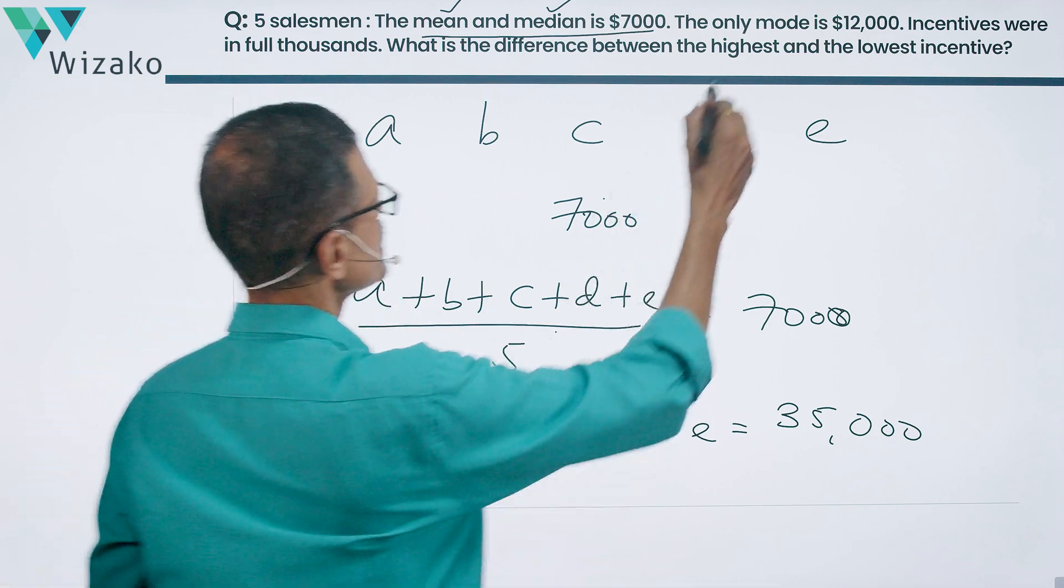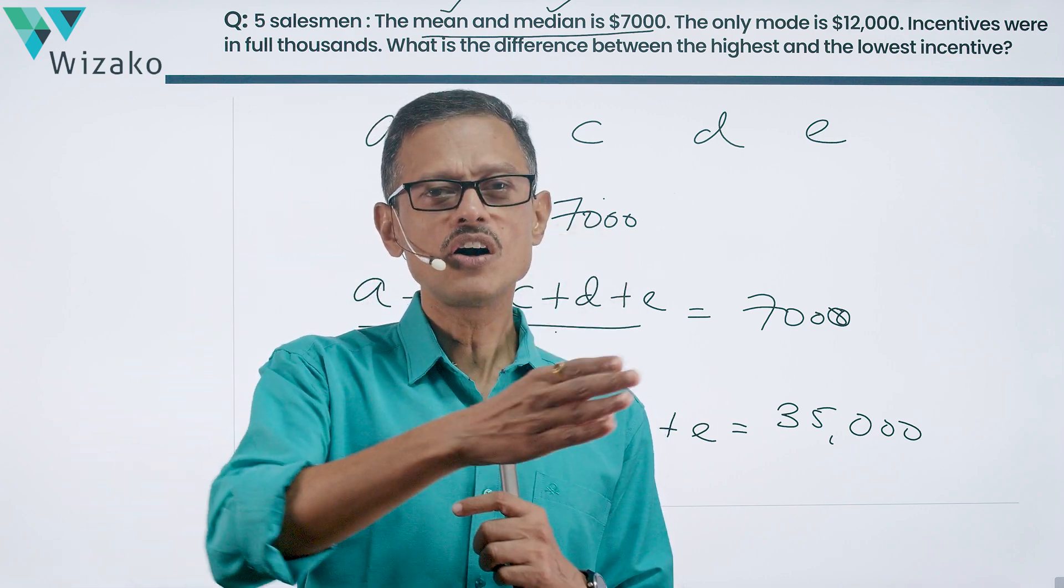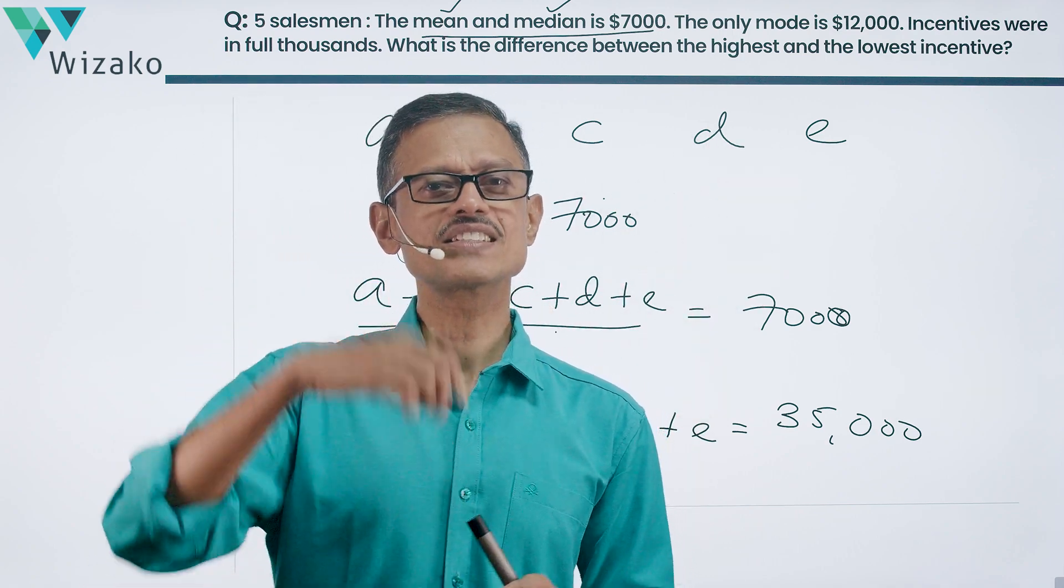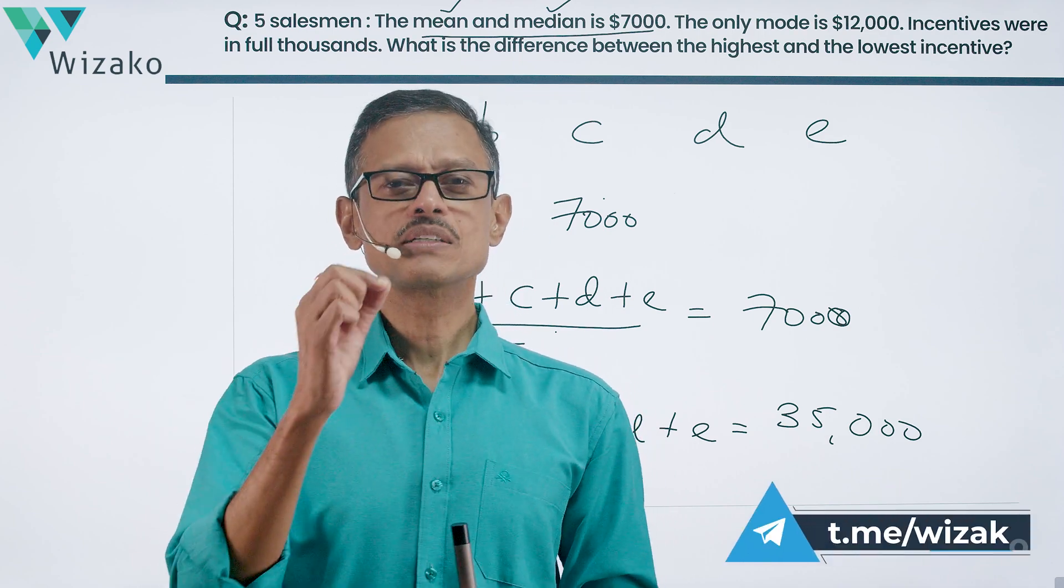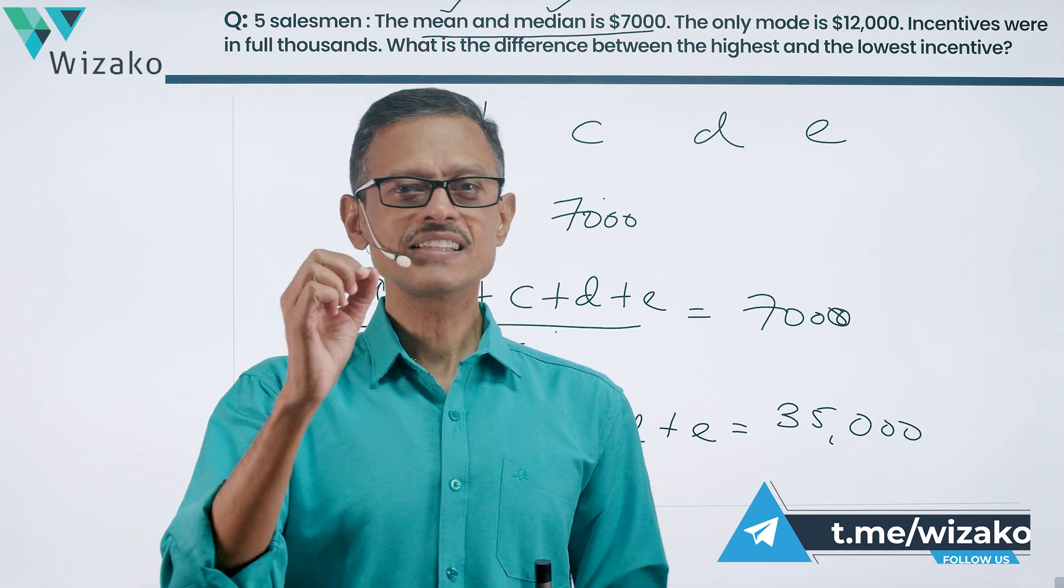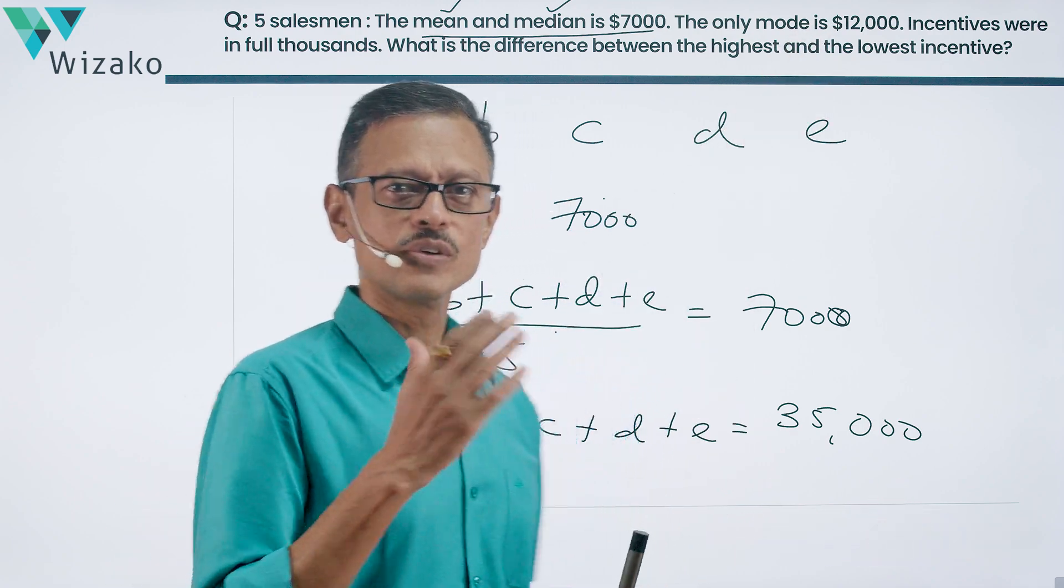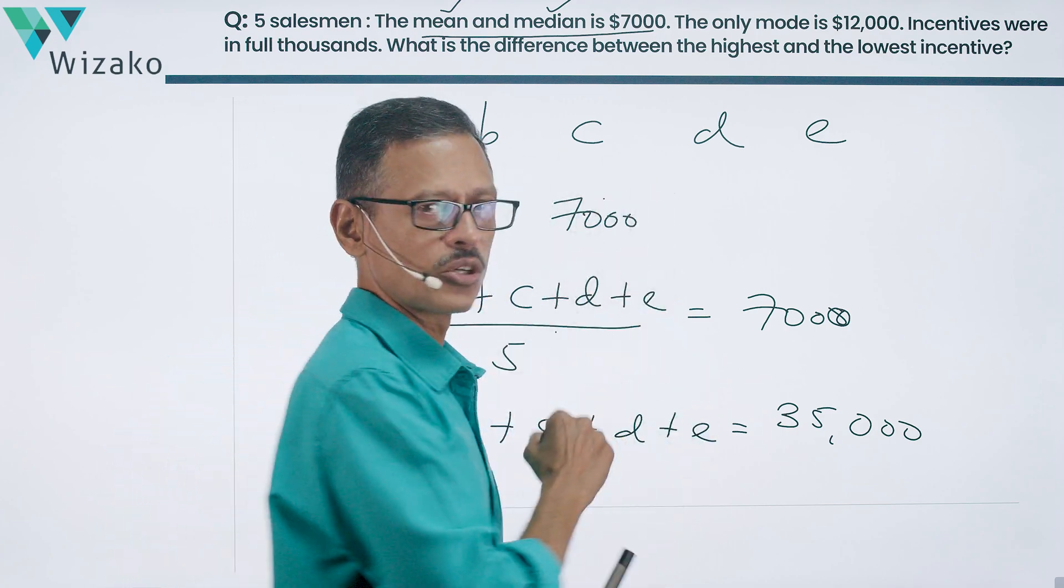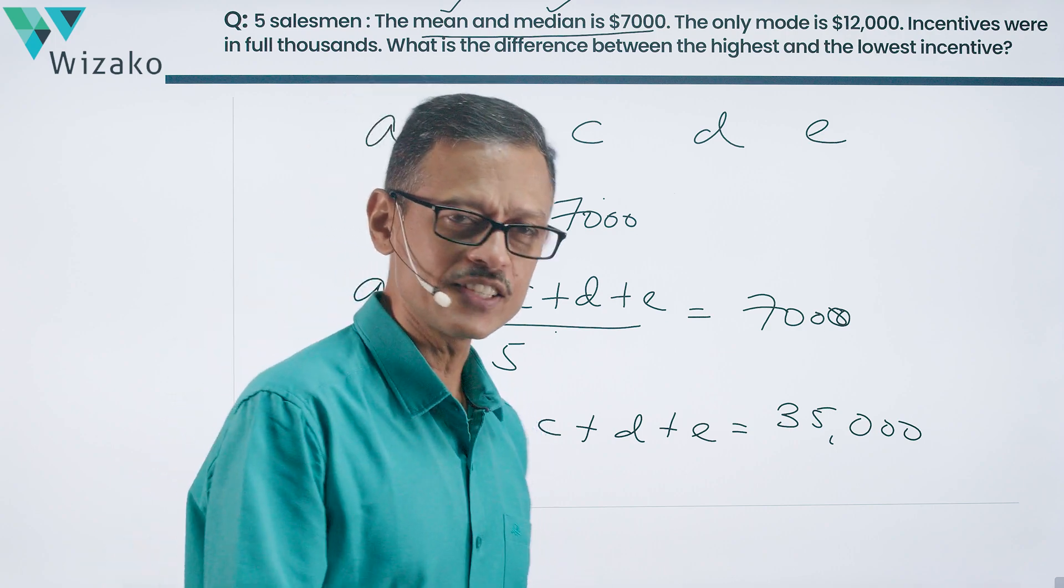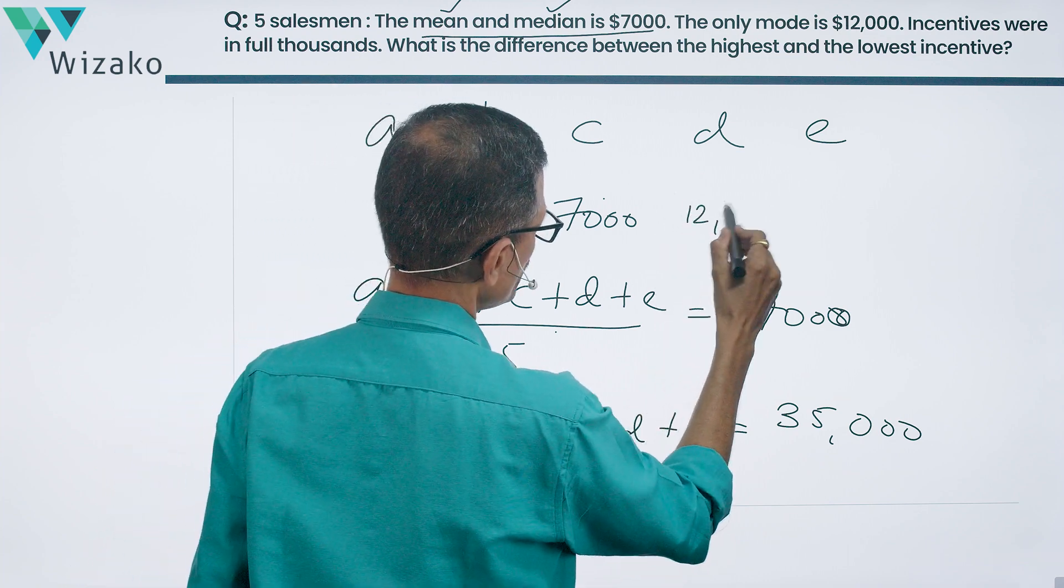Let's look at the next piece of data. There is a mode. If they had said there is no mode, then what it would have meant is all of these five numbers are distinct integers. But they are saying a mode exists. A mode comes into picture when at least one element appears twice. And here they are saying there is only one mode. So 12,000 is the only number that appears at least twice. When you're writing numbers in ascending order, the third number is 7,000. So 12,000 has to appear to the right of it and 12,000 has to appear at least twice. And there are only two numbers which we can fit in greater than 7,000. So D and E are both 12,000.